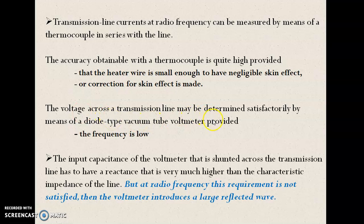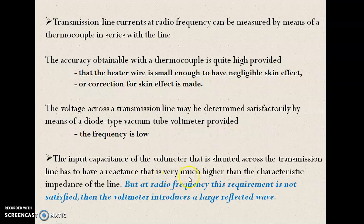The voltage across the transmission line can also be determined, but the condition is that the frequency should be low. Why? Because at lower frequency, the input capacitance of the voltmeter connected across the transmission line must have a reactance that is very much higher than the characteristic impedance of the line. We know that if the frequency of measurement is low, then we can have a very high reactance from the input capacitance. But at radio frequency this requirement is not satisfied, as the reactance will become very small.